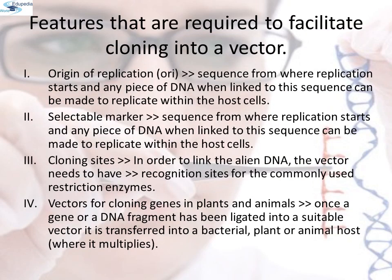Features required to facilitate cloning into a vector: 1. Origin of replication, or ORI — the sequence from where replication starts; any piece of DNA linked to this sequence can be made to replicate within the host cells. This sequence is also responsible for controlling the copy number of the linked DNA. If one wants to recover many copies of the target DNA, it should be cloned in a vector whose ORI supports a high copy number. 2. Selectable marker — helps in identifying and eliminating non-transformants and selectively permitting the growth of transformants. Normally, genes encoding resistance to antibiotics such as ampicillin, chloramphenicol, tetracycline, or kanamycin are considered useful selectable markers for E. coli, as normal E. coli cells do not carry resistance against any of these antibiotics.